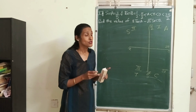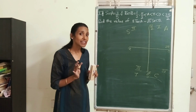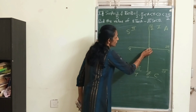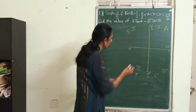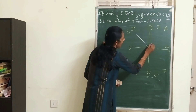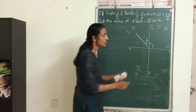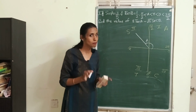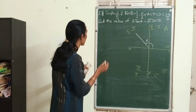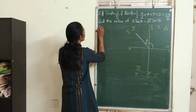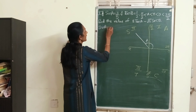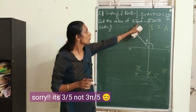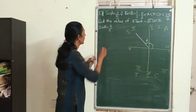Now angle A is given as between π/2 and π, so can you tell me which quadrant angle A lies in? Yes, it will lie in the second quadrant. So angle A is in the second quadrant, which means only sin and cosec are going to be positive. Let's keep that in mind.